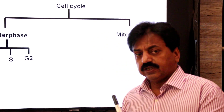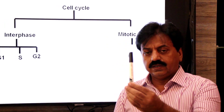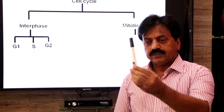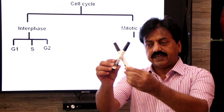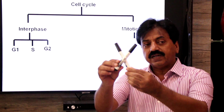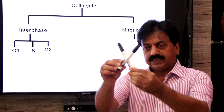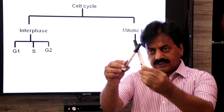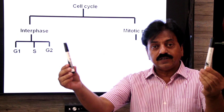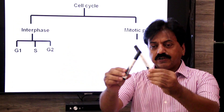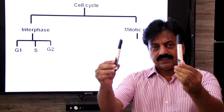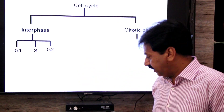Aur sister chromatids ko alag karne ke liye mitotic phase hai. Jo interphase hota hai, us mein jo original chromosome hai, usse duplicated chromosome ban jata hai — isko kehte hain sister chromatids. Mitotic phase is that phase that separates sister chromatids.